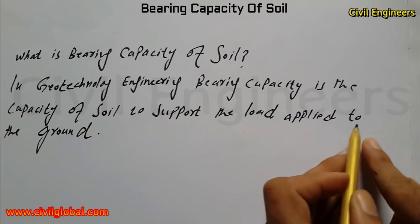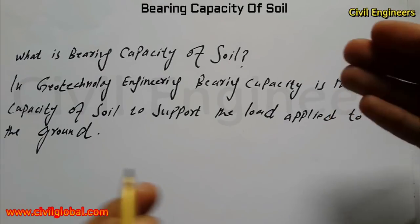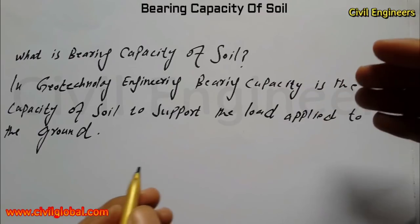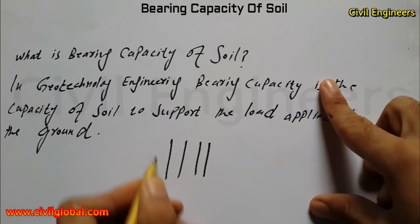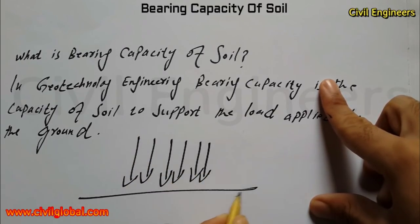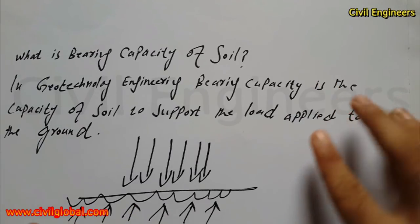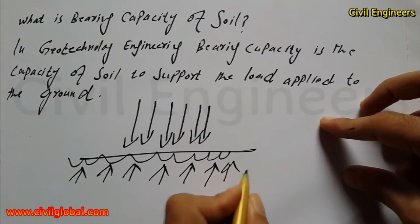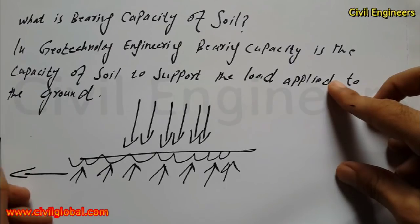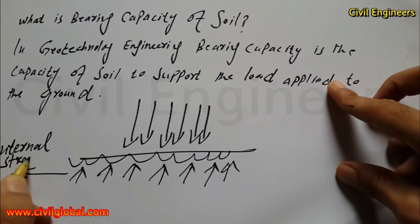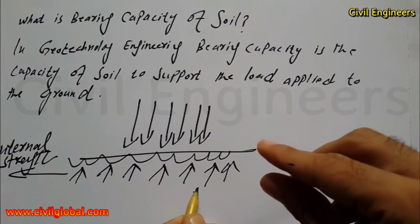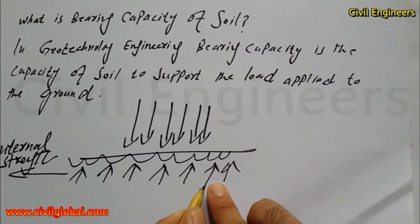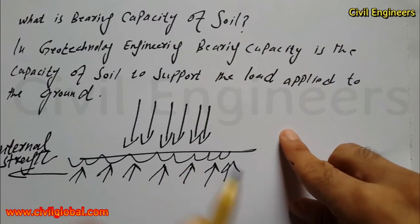Bearing capacity is the capacity of soil to support the load applied to the ground. If you want to design a column, beam, building, or anything else, you have to check the bearing capacity of soil — whether the applied load can be supported by that site or not. Simply put, the internal strength of the soil is called bearing capacity.